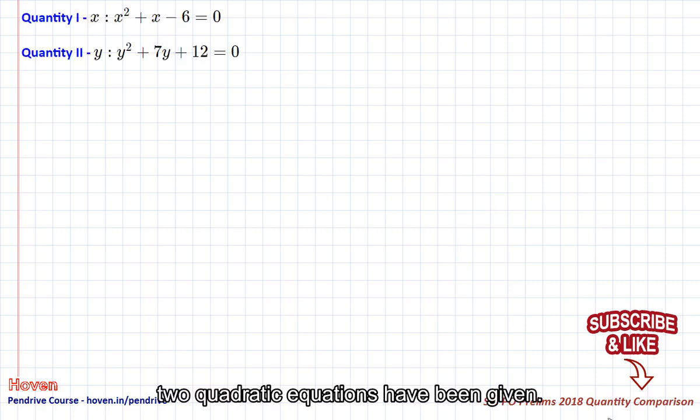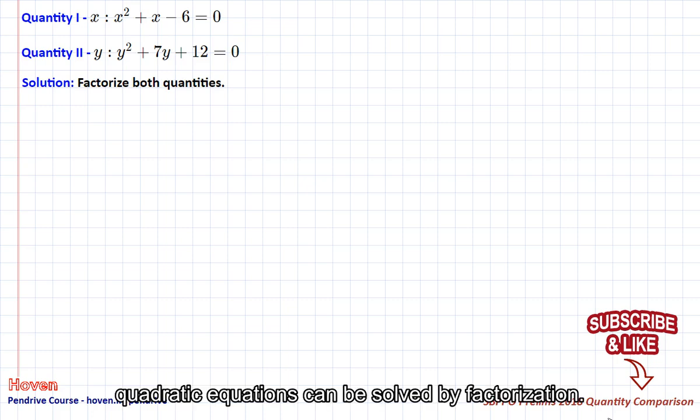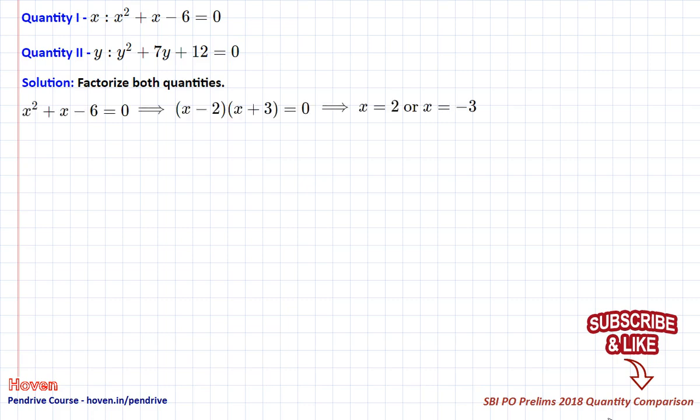Two quadratic equations have been given. We have to determine the greater of x or y. Quadratic equations can be solved by factorization. We get x as 2 or minus 3.